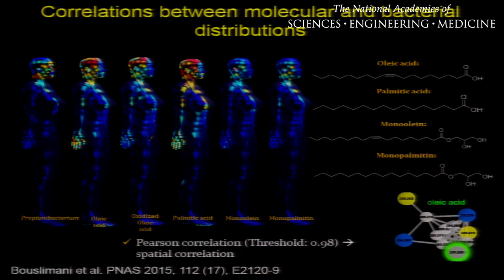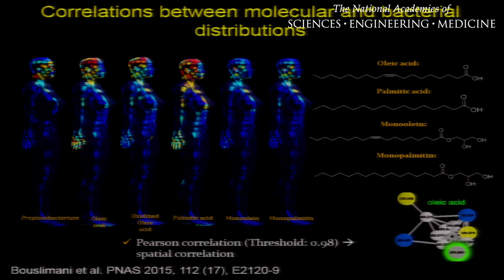The hypothesis is that maybe Propionibacterium can hydrolyze lipids on our skin, leading to the production of these free fatty acids. This hypothesis was indeed confirmed when we tested in vitro hydrolysis of lipids by Propionibacterium and found that oleic acid and oxidized oleic acid were indeed the major hydrolysis products in vitro. So spatial mapping of this microbiome and metabolome tells us that the microbes on our skin can change the chemical environment of our skin.